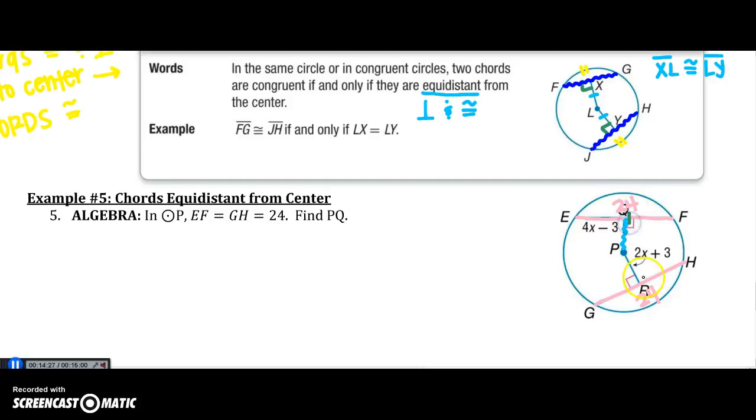Since our chords are congruent to each other, we also know they are equidistant from the center if they are perpendicular. So I know that PQ is equal to PR. So I can say 4X minus 3 equals 2X plus 3. My X becomes 3, so when I plug it into PQ, I know that 4 times 3 minus 3 equals 9.